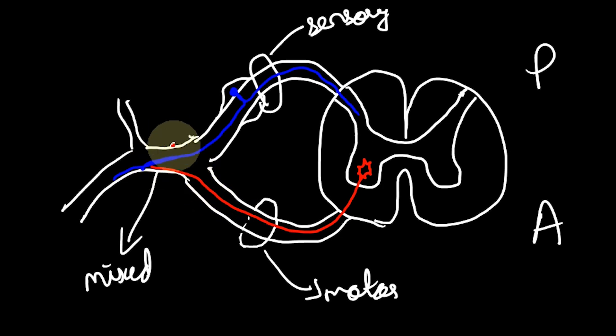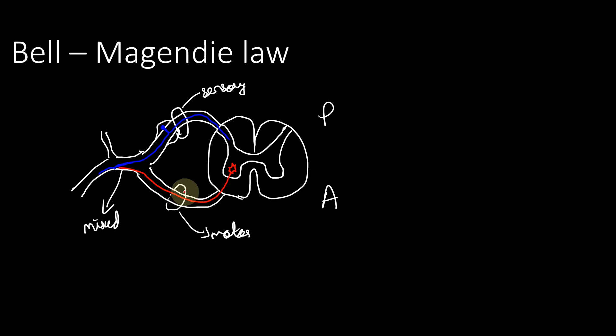These two together form the mixed nerve, but in the dorsal root you have exclusive sensory fibers which are the peripheral and central processes of the pseudo-unipolar neurons. In the ventral root you have the axons emerging from the ventral horn. So this is purely motor and this is purely sensory.